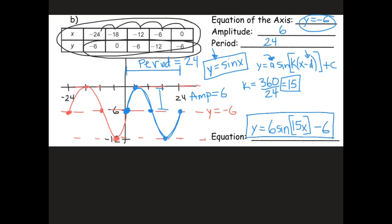To verify the formula is correct, use the table of values. If you plug in x equals negative 6 into the formula, you should get y equals negative 12. I will always attempt to come up with the graph that starts at 0, avoiding a d value. You could also choose a red graph with a d value, or a cosine or upside-down cosine — but I won't go over all those.